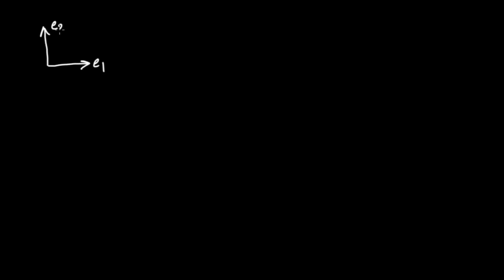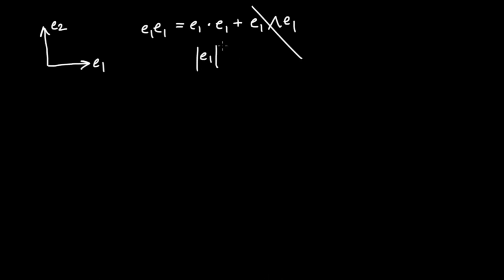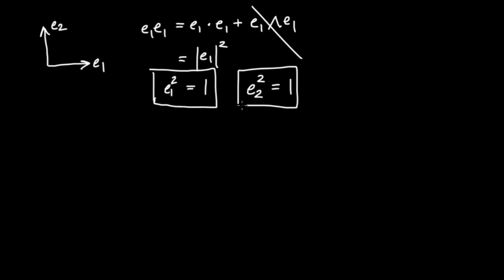Let me be even more concrete by doing calculations with the basis vectors. Taking E1 and the geometric product with itself: E1·E1 plus E1∧E1. The wedge term vanishes, and the dot product is the squared magnitude of E1. Since E1 has length one, E1 squared equals one. Running the same argument with E2, we find E2 squared also equals positive one.